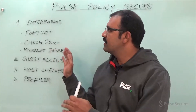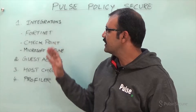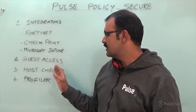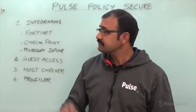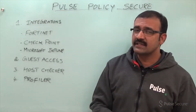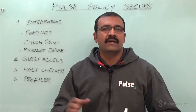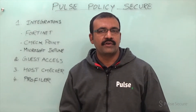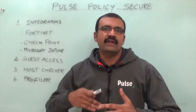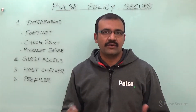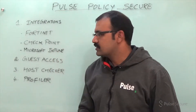As listed here, key features are broadly classified into integrations, guest access solutions, host checker support, and finally profiler. Looking at integrations, Policy Secure already supported leading vendors including Palo Alto Network Firewall for layer 3 authentication. We have expanded our ecosystem to also support Checkpoint and Microsoft Intune.